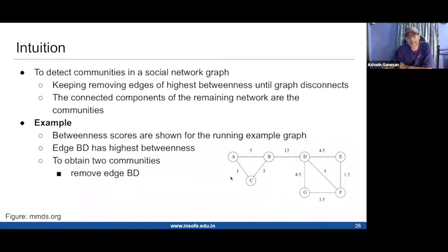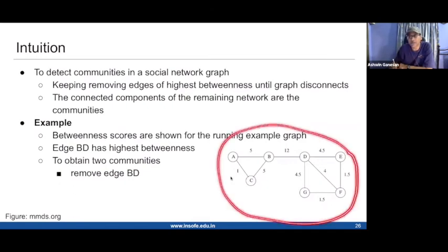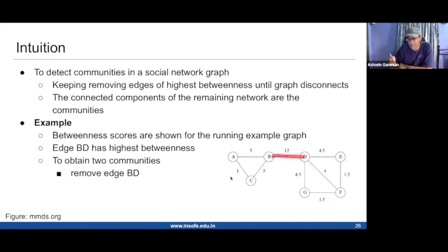Because of that, the edge BD is on many shortest x-y paths, where x can be any one of the three vertices on the left side and y can be any one of the four vertices on the right side. That's why you get three times four is 12, and the betweenness is 12. Every other edge has a lesser betweenness. We looked at the Girvan-Newman algorithm last time, which says if you want to determine what the social communities in a graph are, just keep removing the edges which have the highest betweenness because these edges are likely to be the edges between communities.